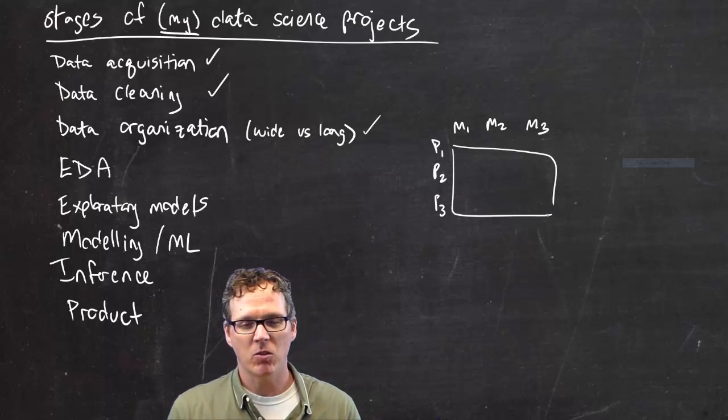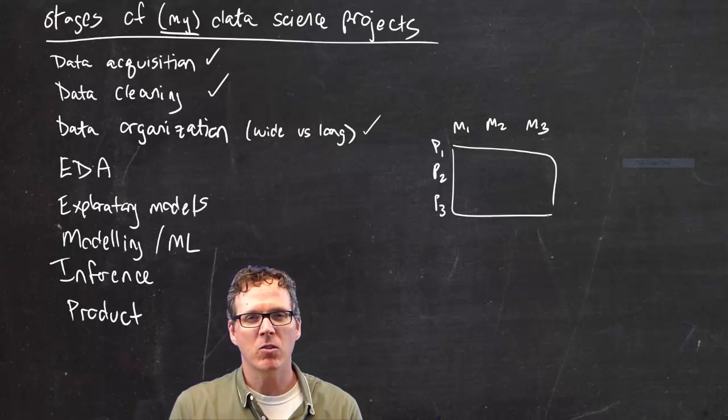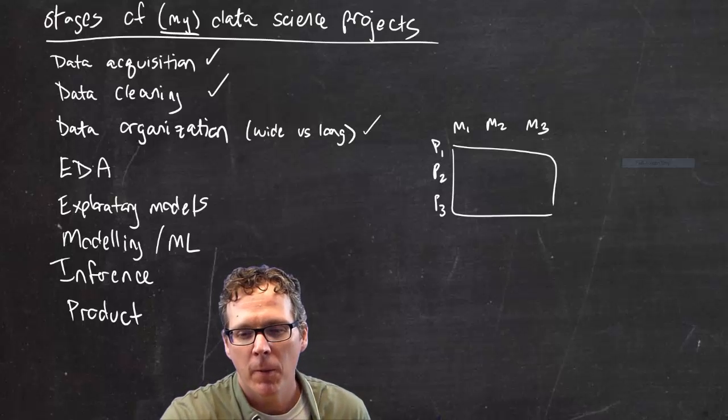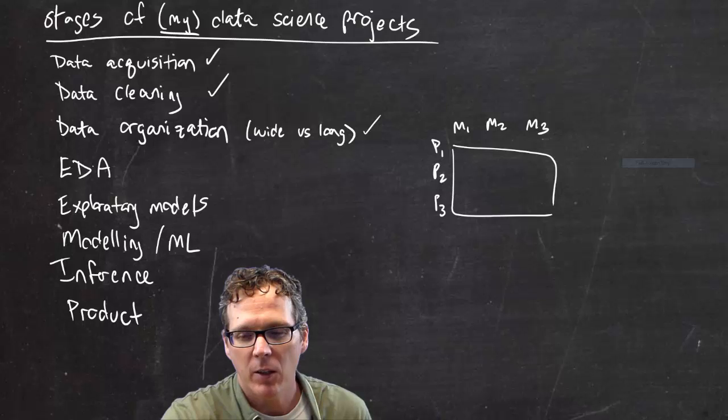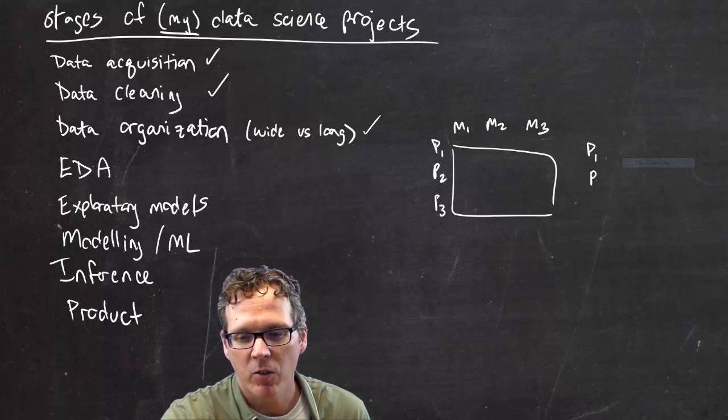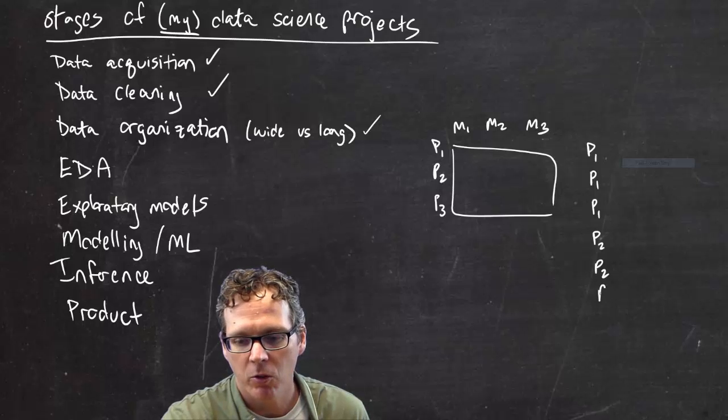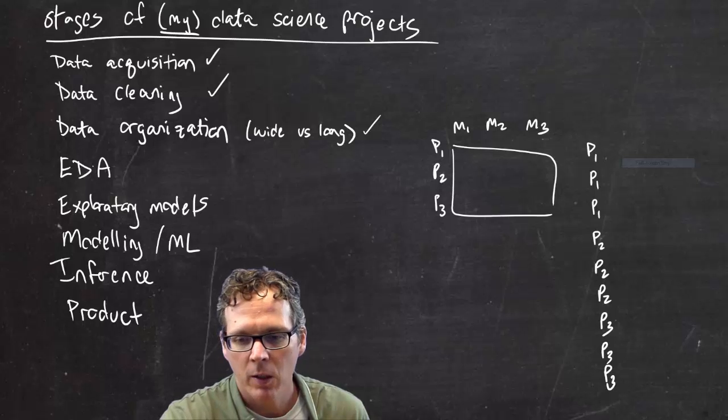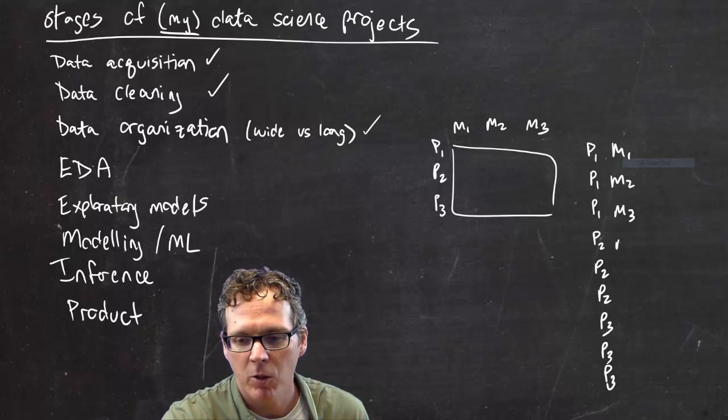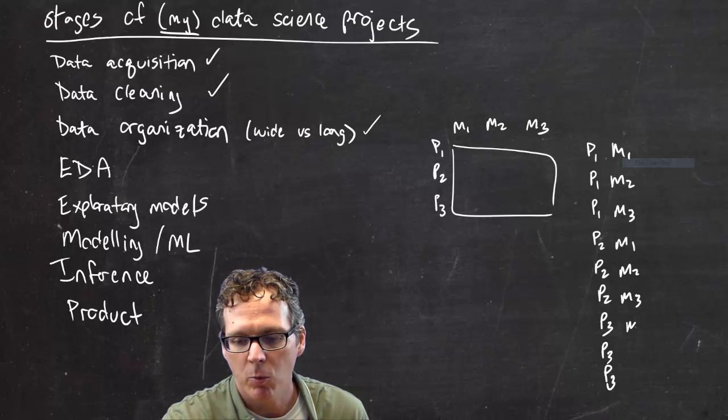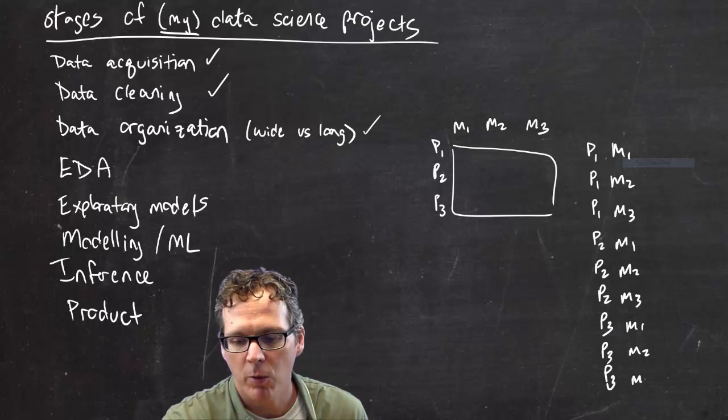Wide format is nice because it's nice and compact and it's easy to display. It's nice to make heat maps with, but another way to display the data would be person one, or organize the data, person one, person one, person two, person two, person two, person three, person three, person three, measurement one, measurement two, measurement three, measurement one, measurement two, measurement three, measurement one, measurement two, measurement three that way.